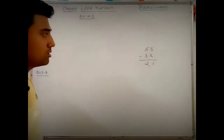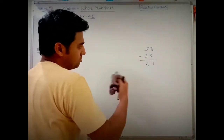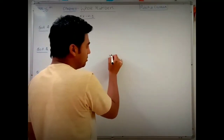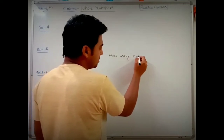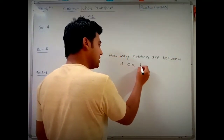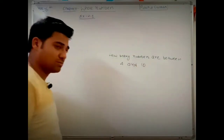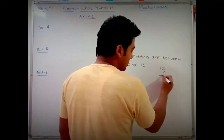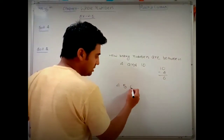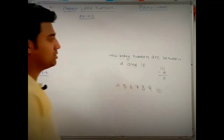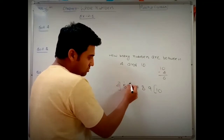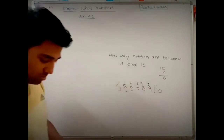That answer is wrong, even though the subtraction is correct. Let's understand why. Consider: how many numbers are between 4 and 10? By subtraction, 10 minus 4 equals 6. But writing them out: 4, 5, 6, 7, 8, 9, 10 — the numbers between 4 and 10 are 5, 6, 7, 8, 9, which is only 5 numbers.